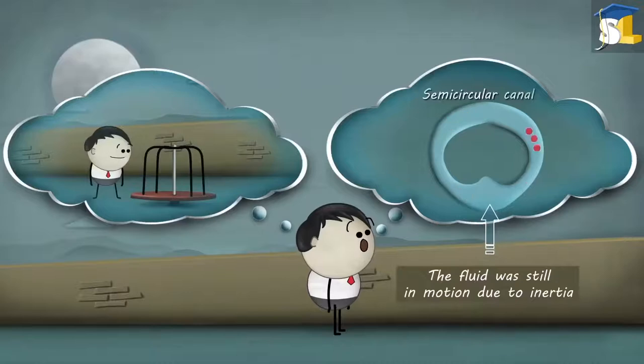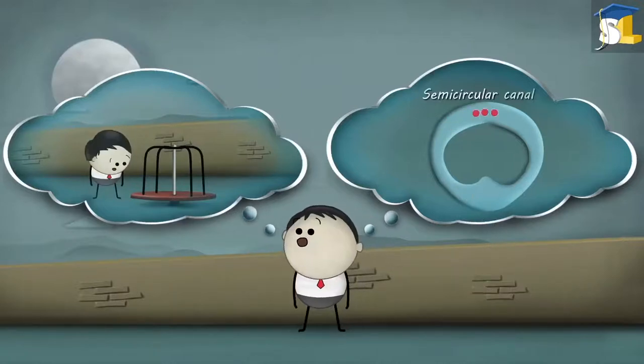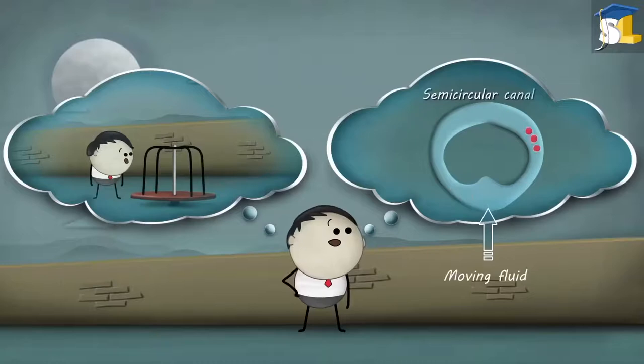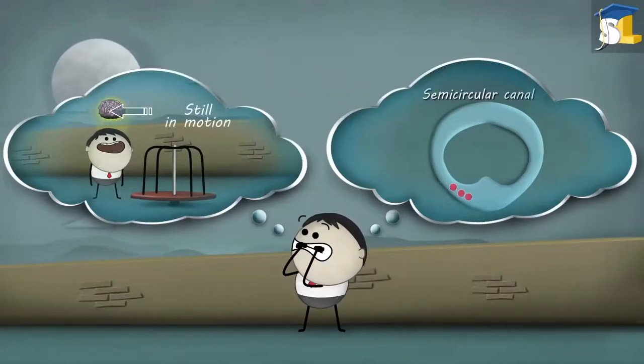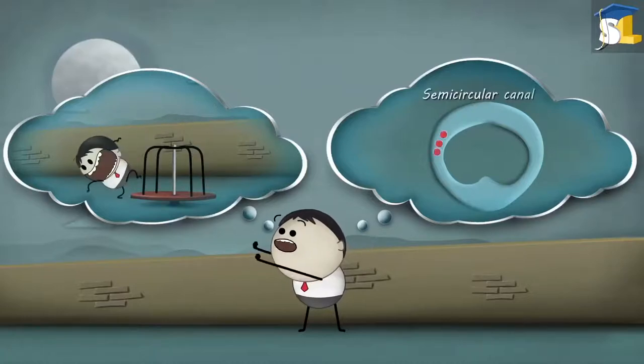The fluid was still in motion due to inertia. Hence, even though you were not moving, the moving fluid gave your brain false information telling you that you are still in motion. Thus, you are not able to maintain your balance.